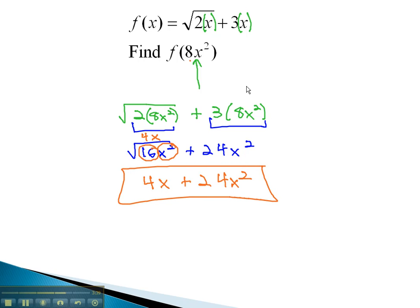When we replace our variable with 8x squared, we end up with the function 4x plus 24x squared. Just as we could replace the variables with a number, we can also replace them with a function, always remembering parentheses.